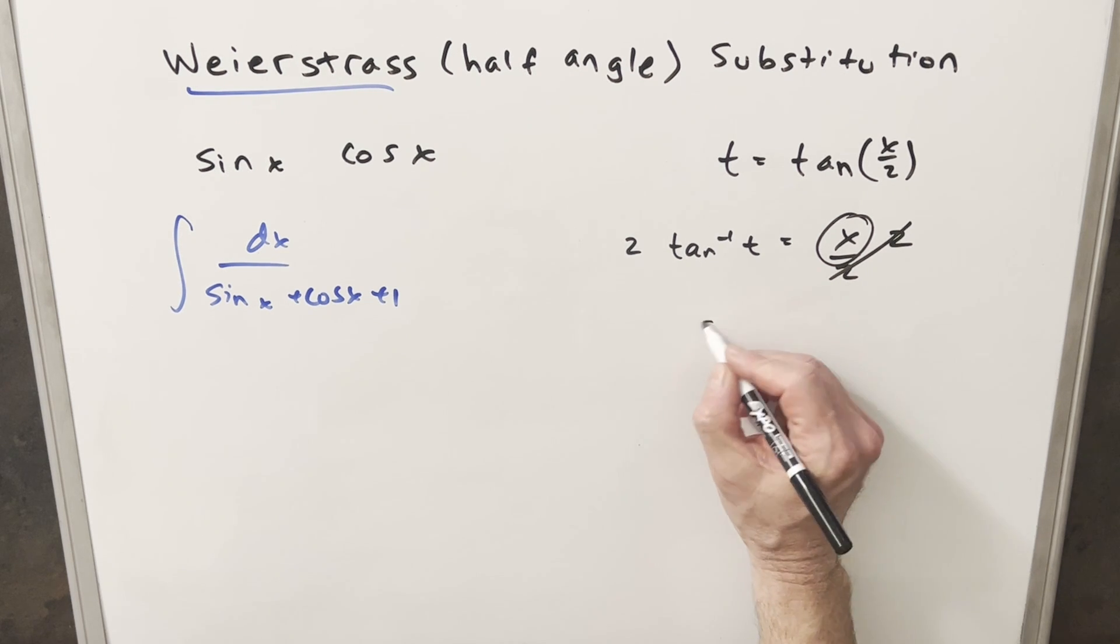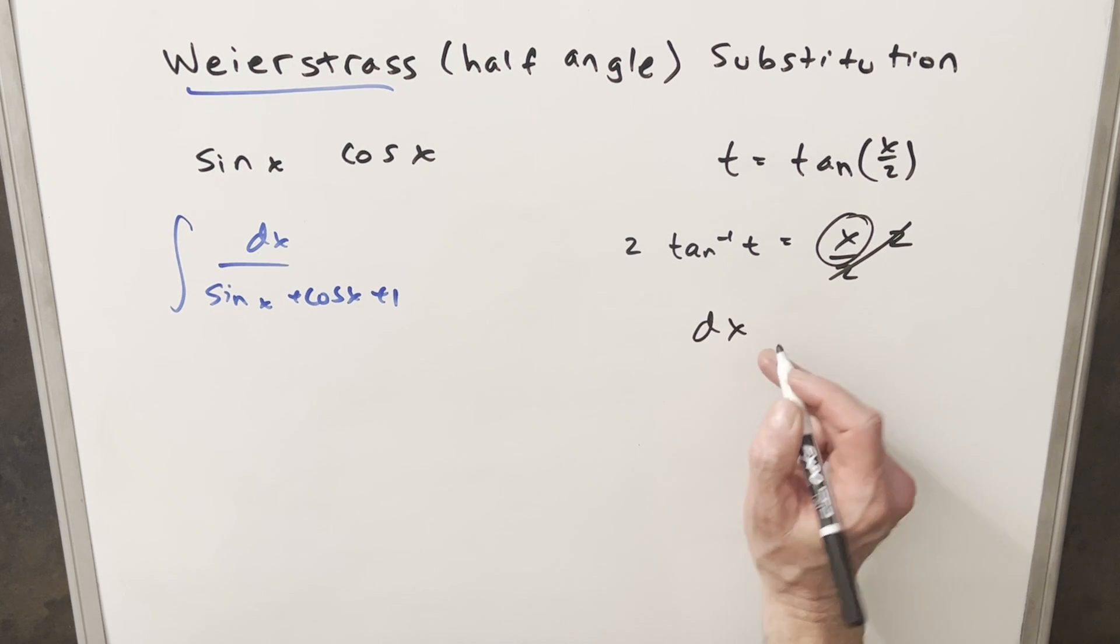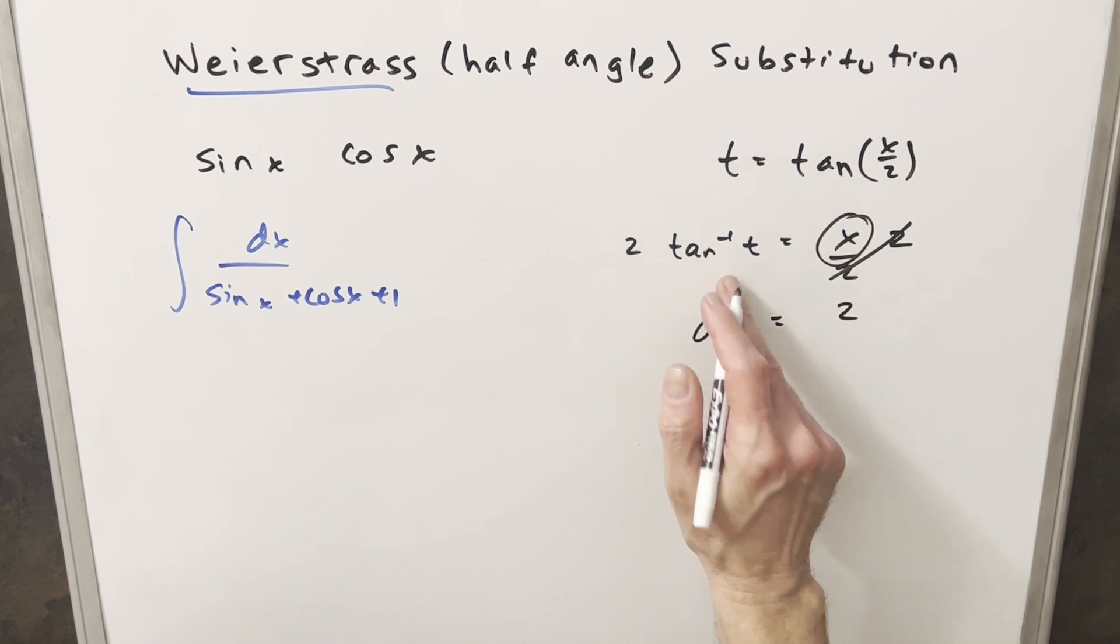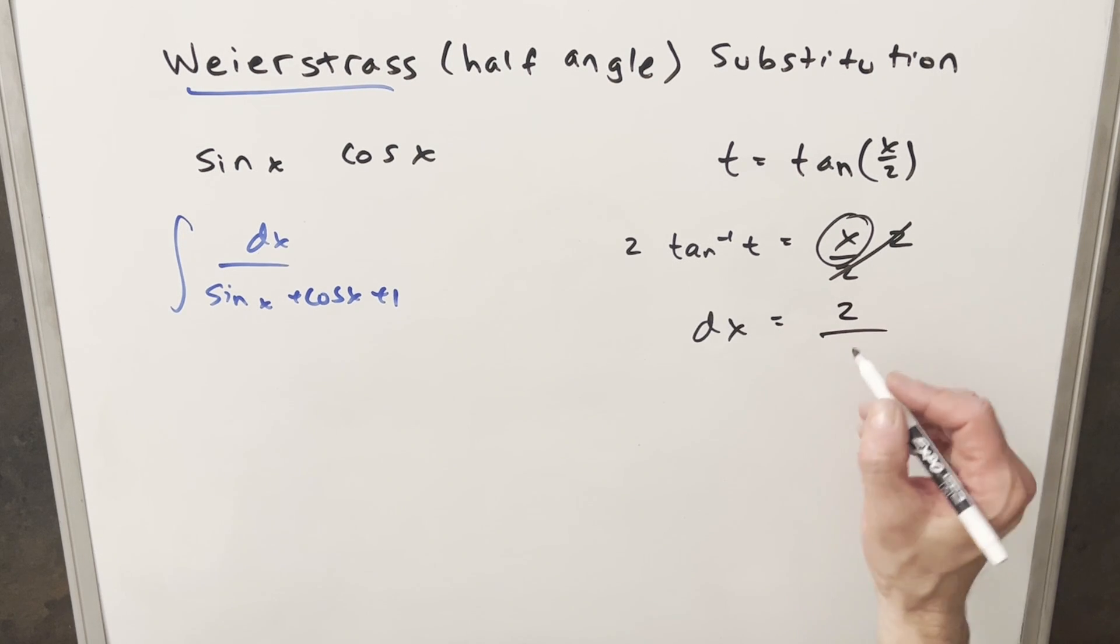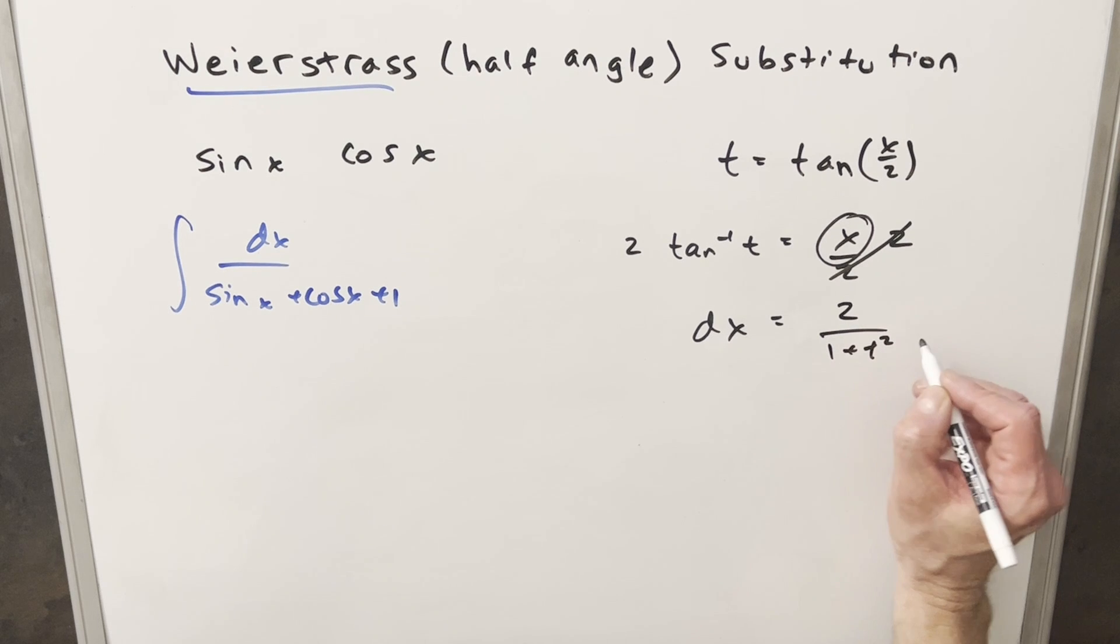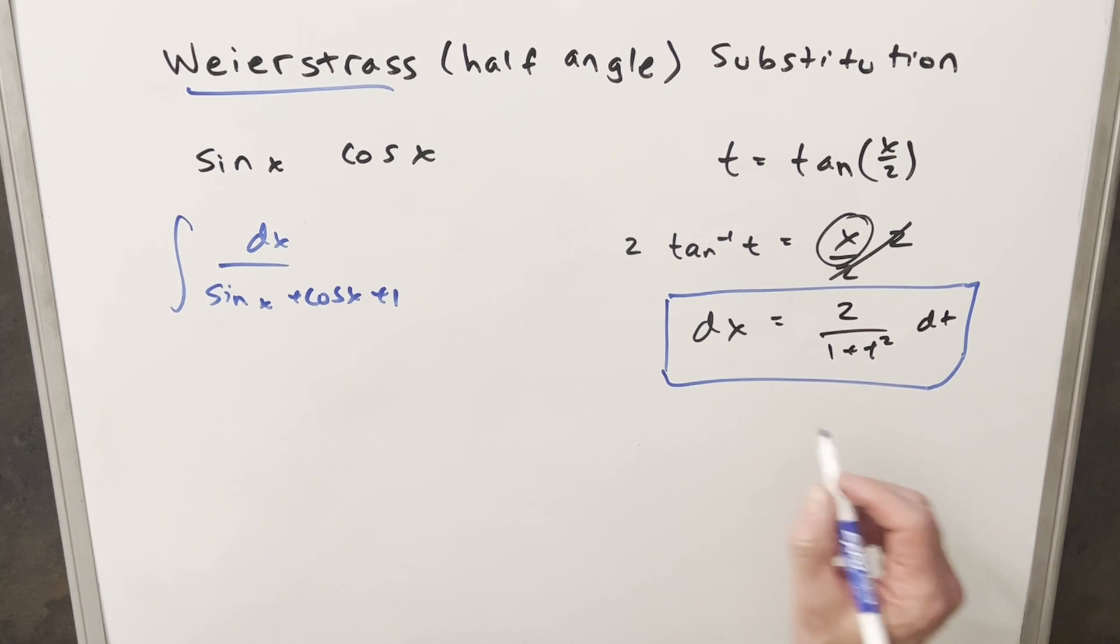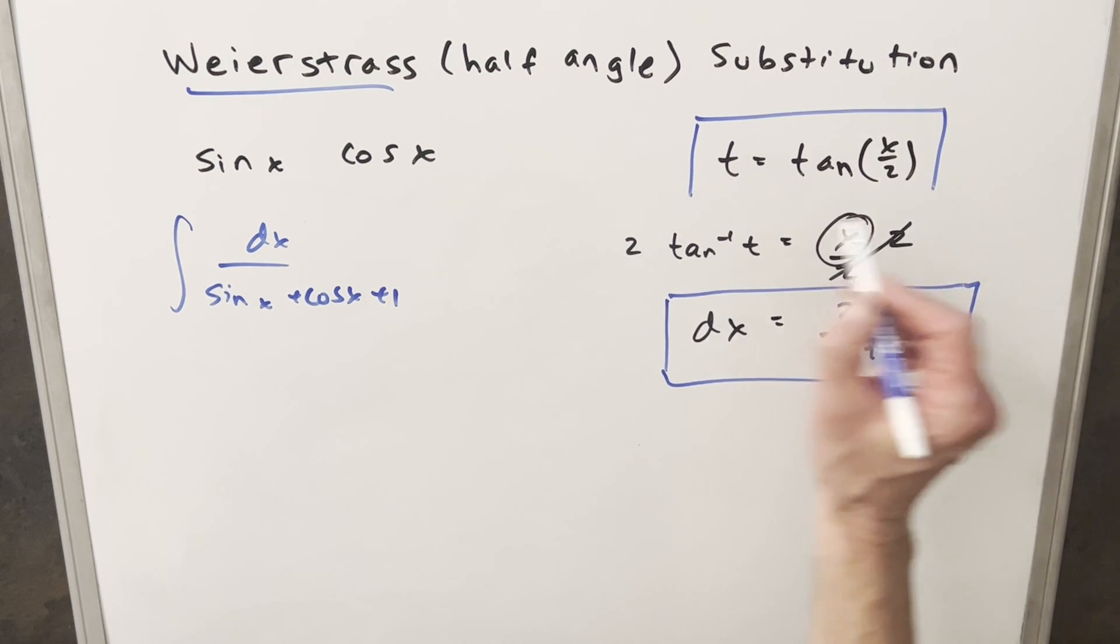And so what that allows me to do is I can take my derivative and rearrange this. So we're going to get dx here. The derivative here, we'll just have our 2. And the derivative of arctan is just going to be 1 over 1 plus t squared dt. And so I'll just box this because this is going to be a useful value we will need to do if we're doing an integral.